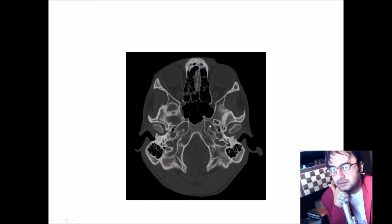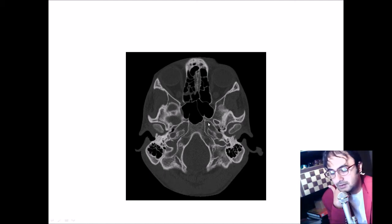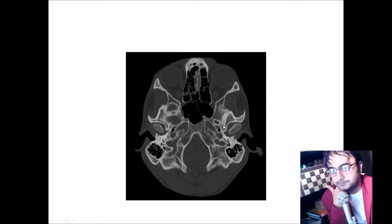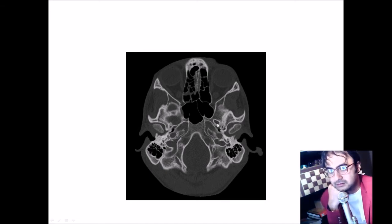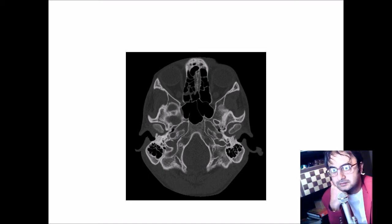Now a very important slide: the carotid canal is replaced at this level by the foramen lacerum. This long shadow is the foramen lacerum — here is its anterior part and here is its posterior part. This larger hyperdense area is the foramen ovale, and the smaller one is the foramen spinosum. For a learning mnemonic: L for long, L for lacerum; O for oval, as the big one; S for small, S for spinosum. This is how you can remember them.